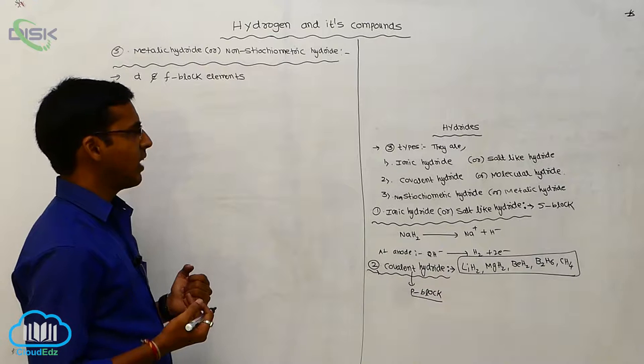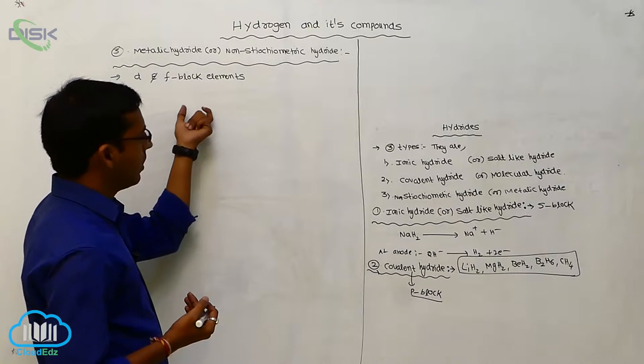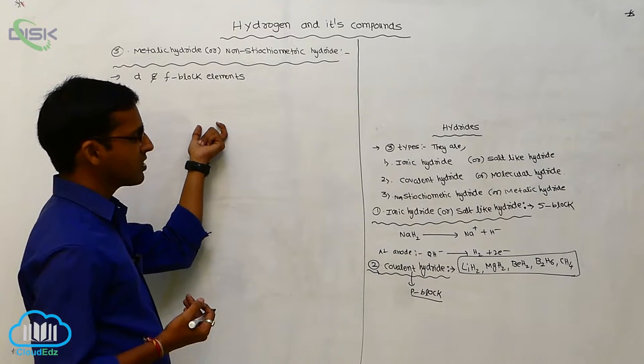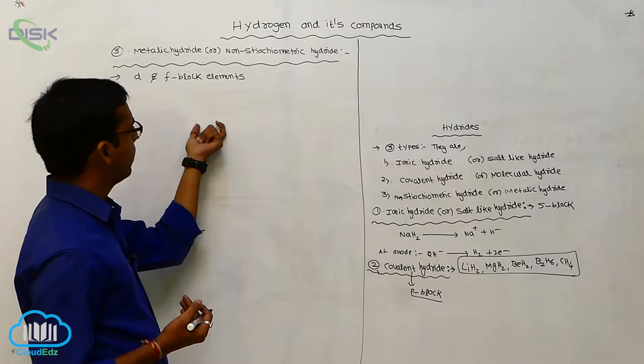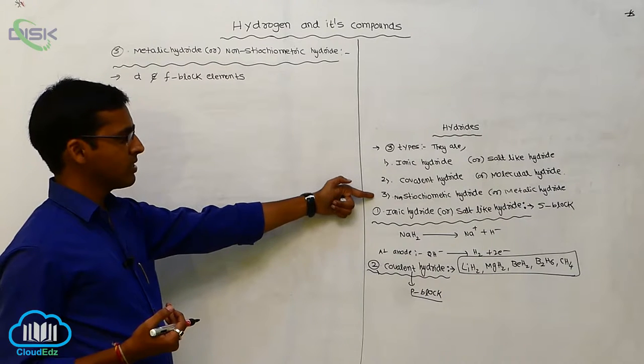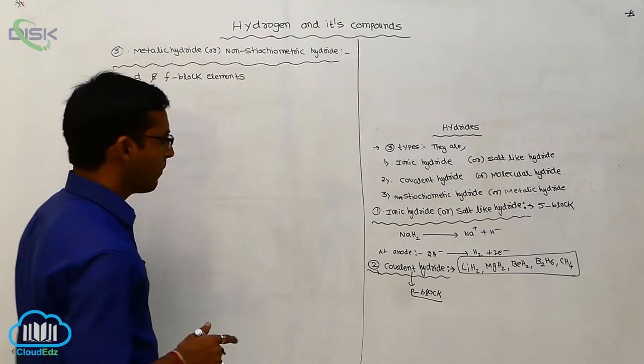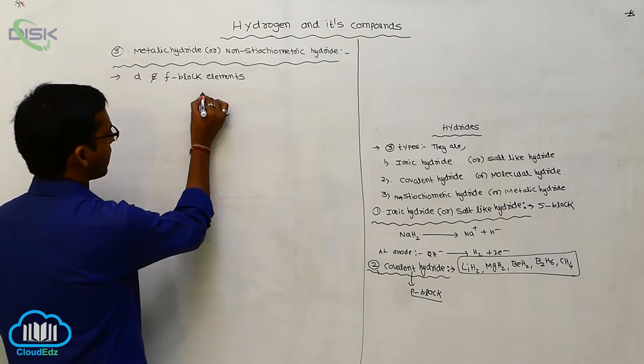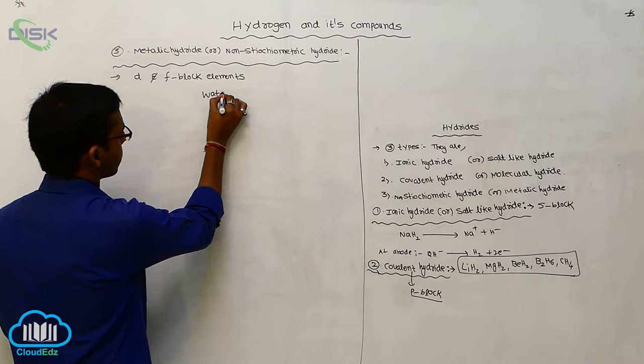Hydrides are three types: ionic, covalent and non-stoichiometric hydride. First one is S-block, which is prepared from S-block elements, P-block elements, D and F-block elements. After this, we discuss another component, that is water.